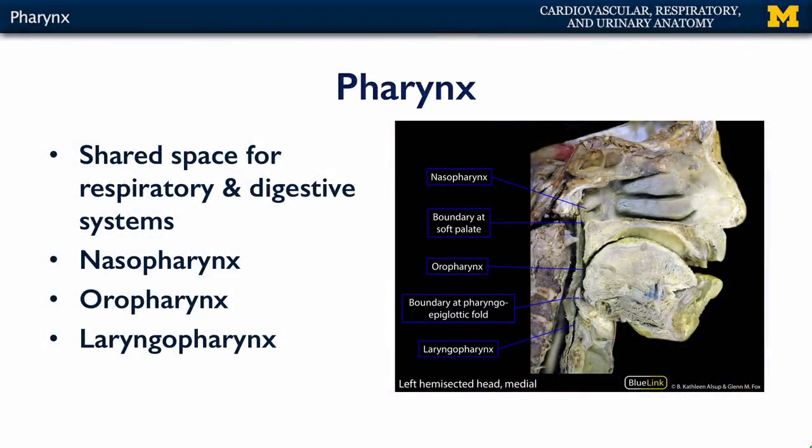The pharynx consists of three spaces: a nasopharynx, which is continuous with your nasal cavity; an oropharynx, which is continuous with both the nasopharynx and the oral cavity; and a laryngopharynx, which is contiguous with both the oropharynx, the larynx, and the esophagus.